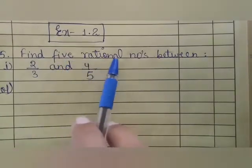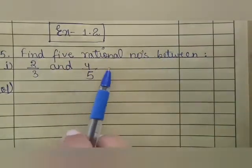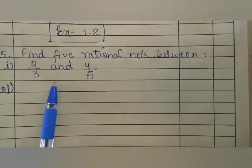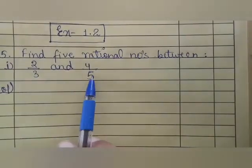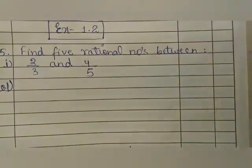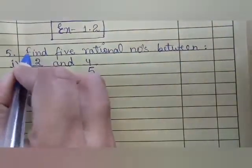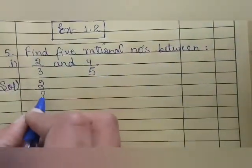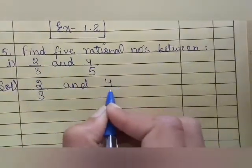We have to find rational numbers between the given rational numbers. You have 2 rational numbers, 2 upon 3 and 4 upon 5, and you have to find 5 rational numbers. To solve this question, first of all we will note down 2 upon 3 and 4 upon 5.